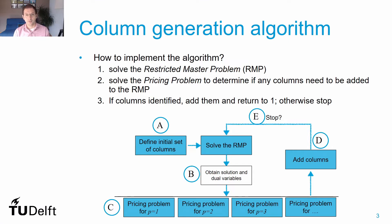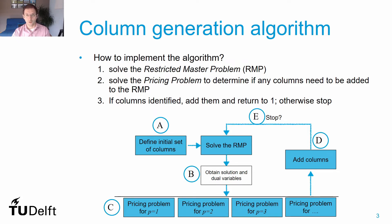In generic terms, the column generation algorithm is composed of four sequential steps. In the first step we solve the current restricted master problem or RMP. We then determine which new columns to add, and if any, in the third step we add columns to our RMP problem. In the last step we check if there are more columns to be added and if not we stop our algorithm. To start this process we need to define a set of columns to guarantee we can solve the RMP for the first time, obtaining a feasible solution — that is point A in our flow chart.